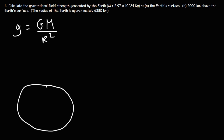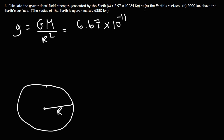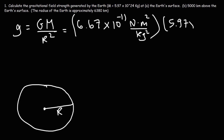That's the formula we'll use to calculate the gravitational field strength generated by the Earth. We need to use the radius of the Earth as the r value — that's the distance from the center to the surface, which is 6,380 kilometers. Now let's plug in what we know. The gravitational constant G is 6.67 times 10 to the negative 11 newton·square meters per square kilogram. We multiply that by the mass of the Earth, which is 5.97 times 10 to the 24 kilograms.